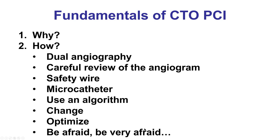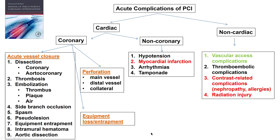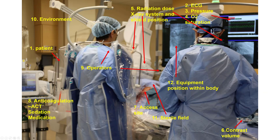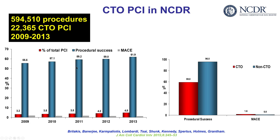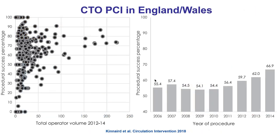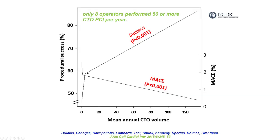CTO-PCI carries an increased risk of complications, so operators should be very aware — but not paralyzed. It is important to know the different types of complications, such as acute vessel closure, perforation, and equipment loss or entrapment, and to monitor the patient constantly during the procedure so that if a complication occurs, it can be discovered quickly. Expert centers achieve success rates of about 85–90% with roughly 2–3% major complication risk. Non-selected centers show much lower success rates of 50–60%, as reported by NCDR and England/Wales data. Success is better at experienced centers, where higher case volume leads to better outcomes and lower complication rates.